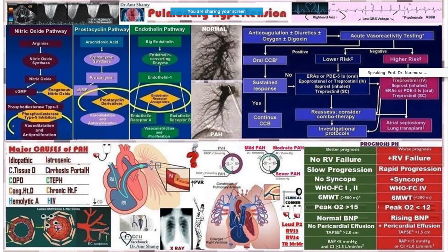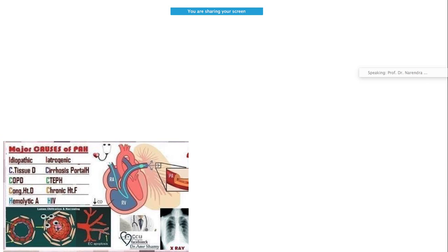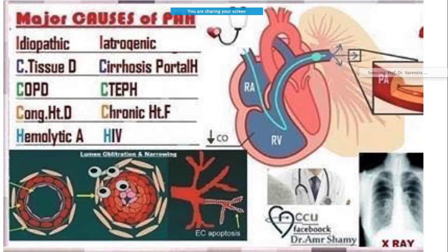This is a comprehensive slide describing the whole of PAH. Coming to the causes: PAH could be idiopathic, connective tissue disorder, COPD, congenital heart disease, hemolytic anemia, HIV, chronic heart failure, or cirrhotic portal hypertension.